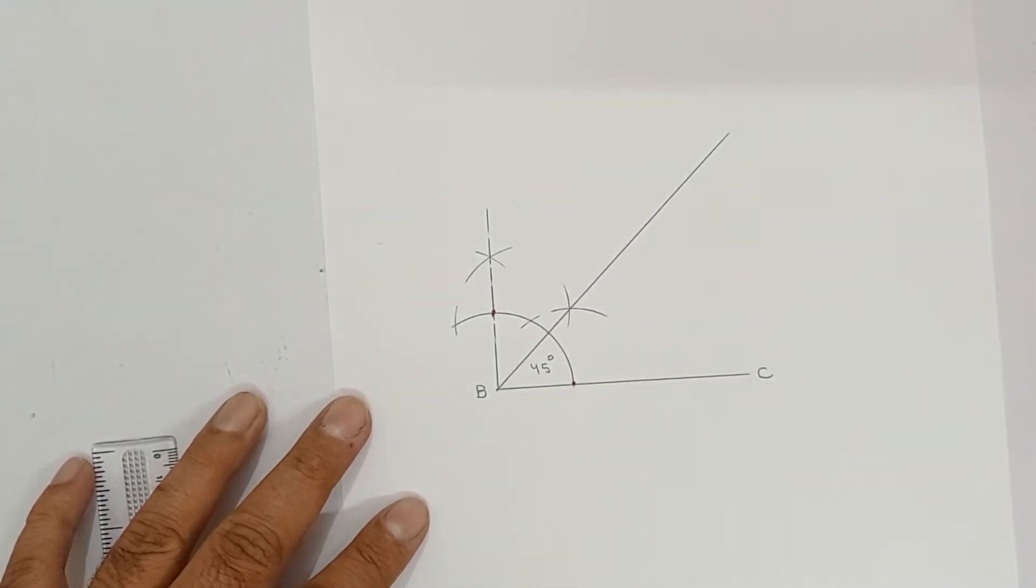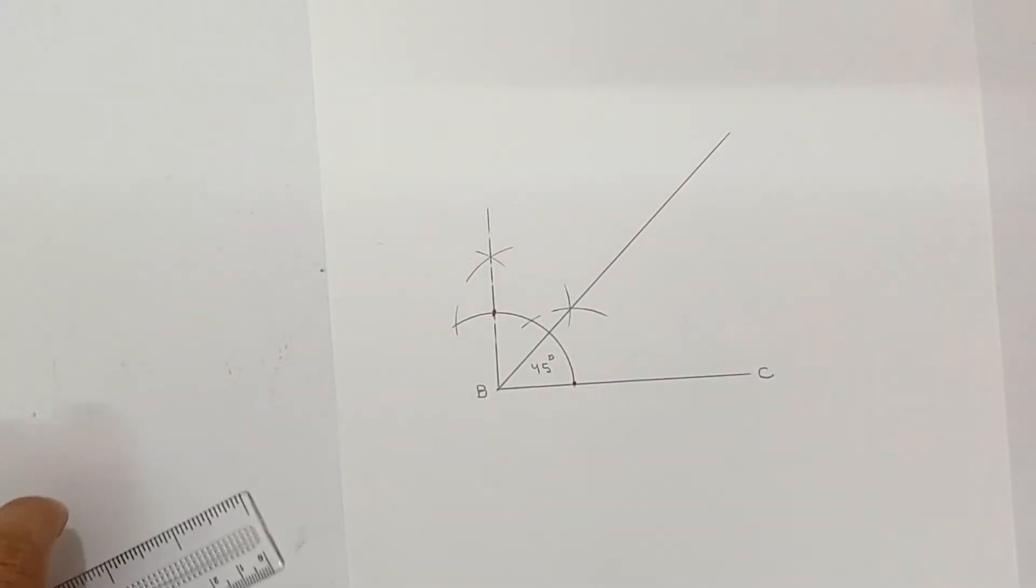So, this angle is 45 degree. Labeling also has to be done. As given here, 45. AB minus AC is 3.5.